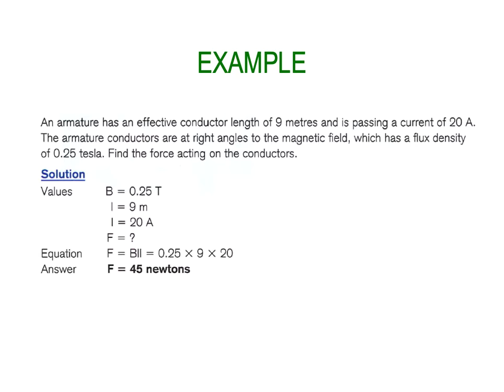Example: An armature has an effective conductor length of 9 metres and is passing a current of 20 amps. The conductors are at right angles to the magnetic field, which has a flux density of 0.25 tesla. Find the force acting on the conductor. Listing what we know: B = 0.25 T, L = 9 m, I = 20 A. Applying F = BIL: 0.25 × 9 × 20 = 45 newtons of force acting on that conductor.